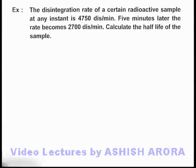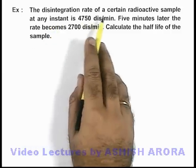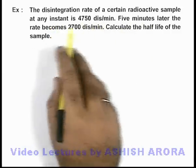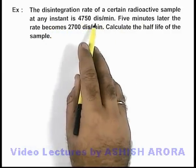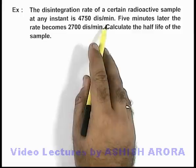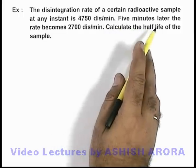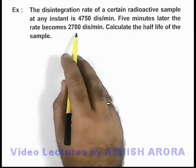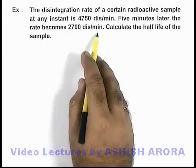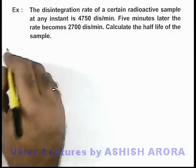In this example, we are given that the disintegration rate of a certain radioactive sample at any instant is 4750 disintegrations per minute. Five minutes later, the rate becomes 2700 disintegrations per minute, and we are required to calculate the half-life of the sample.